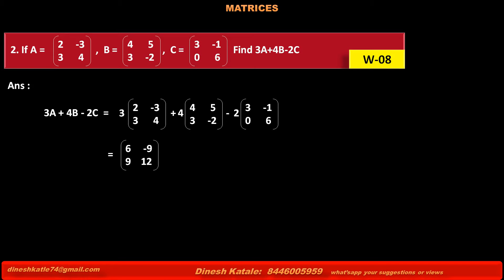Multiplying matrix A by scalar 3, we get 3×2 is 6, 3×(-3) is -9, 3×3 is 9, 3×4 is 12.